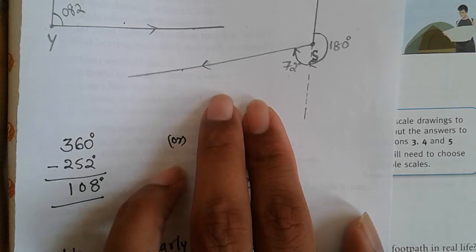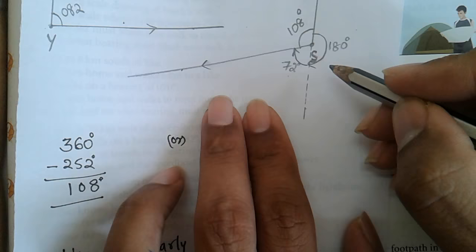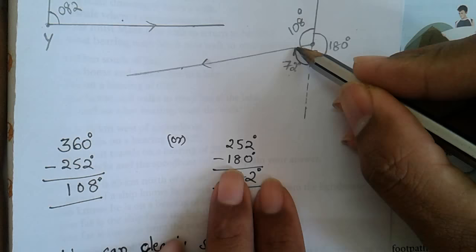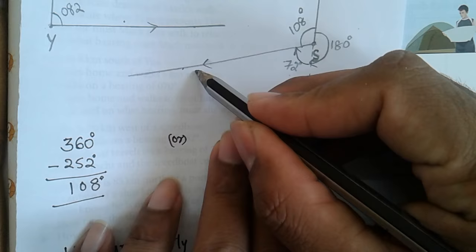So this 108 degrees in anticlockwise direction is same as 252 degrees clockwise direction. Now the speedboat travels in this direction.